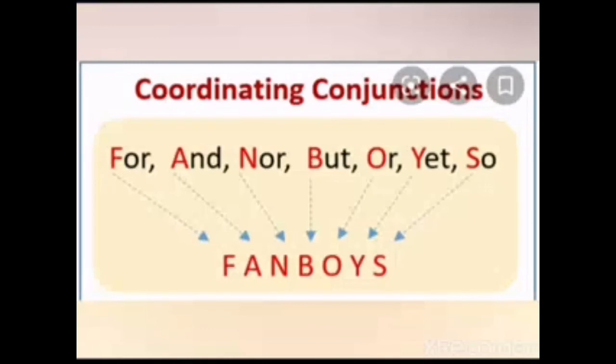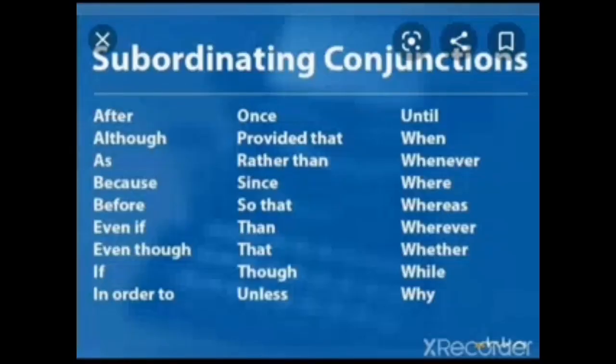The coordinating conjunctions are: for, and, nor, but, or, yet, and so - it makes FANBOYS. Subordinating conjunctions are so many in number. Here is the list of subordinating conjunctions that are used to make smaller phrases join together to make them a big sentence.